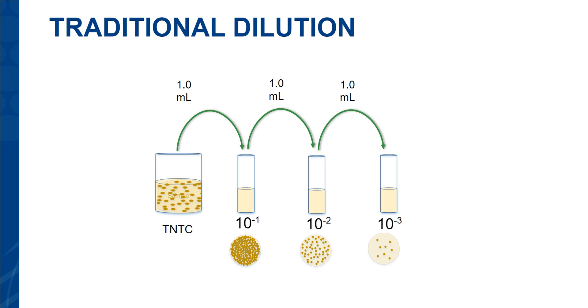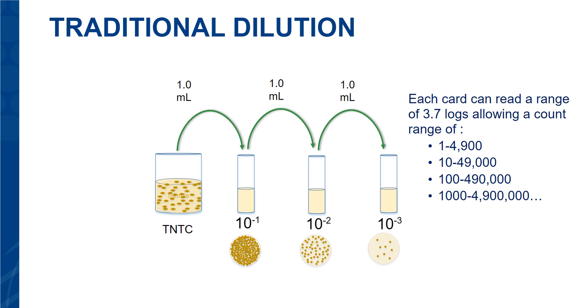With the tempo system, each card can read a range of 3.7 logs allowing a count range of 1 to 4,900, 10 to 49,000, 100 to 490,000, 1,000 to 4,900,000, etc.